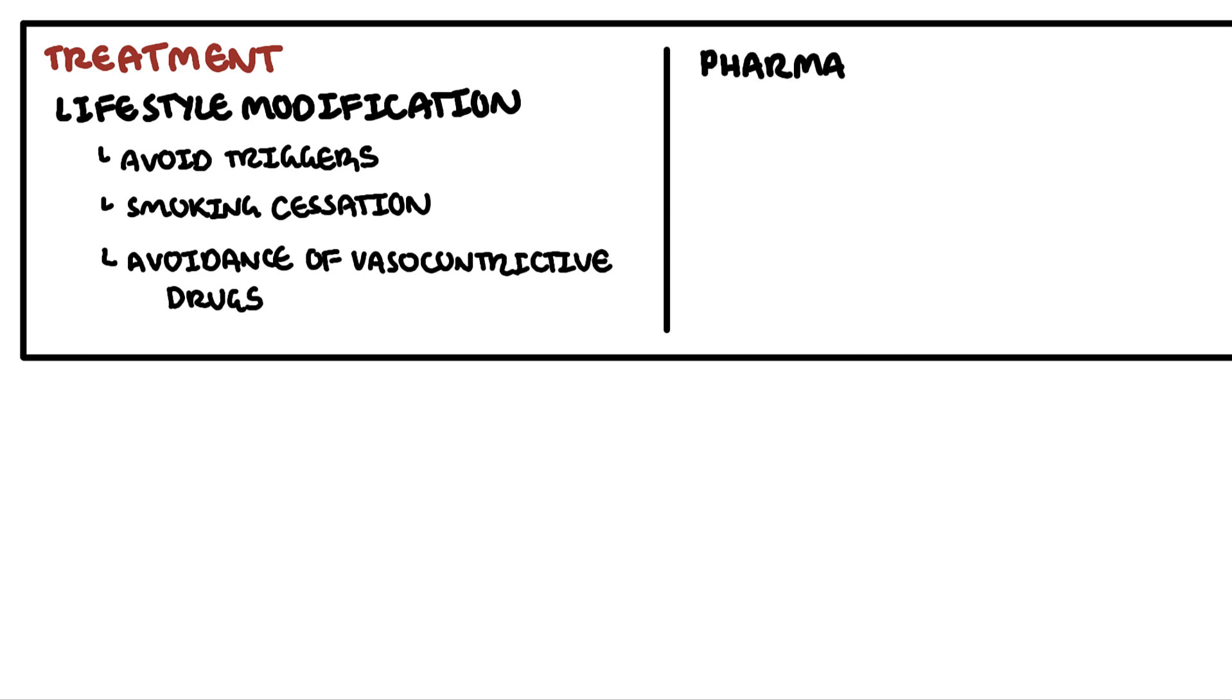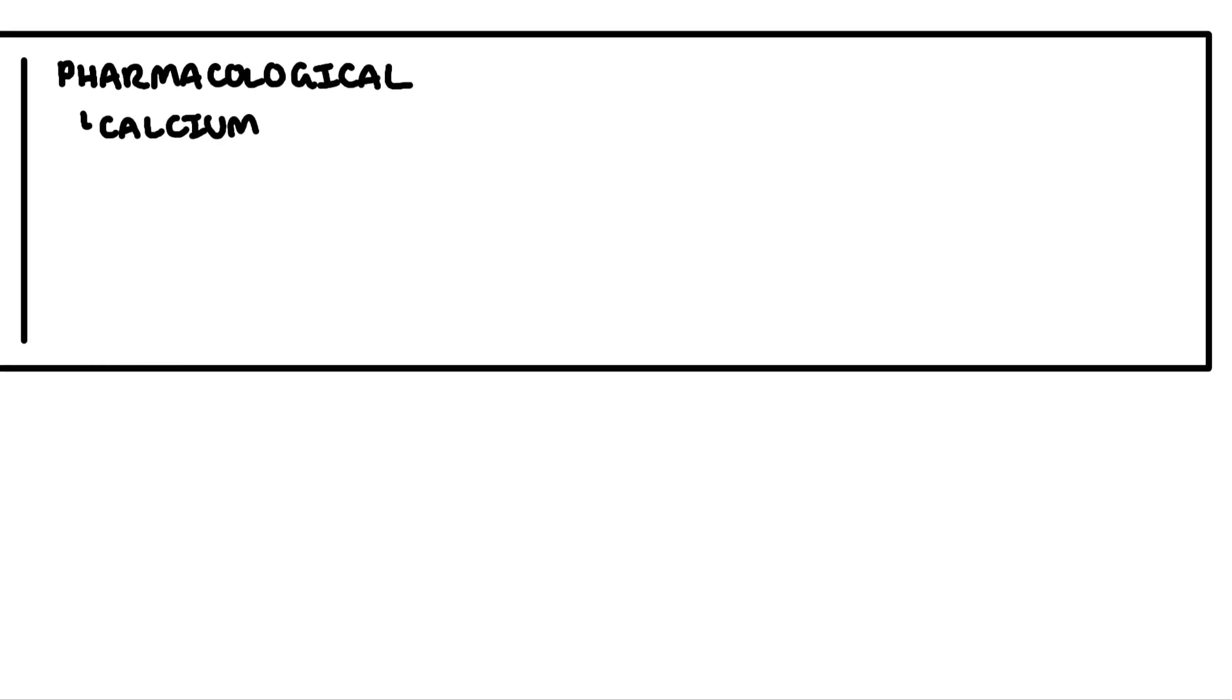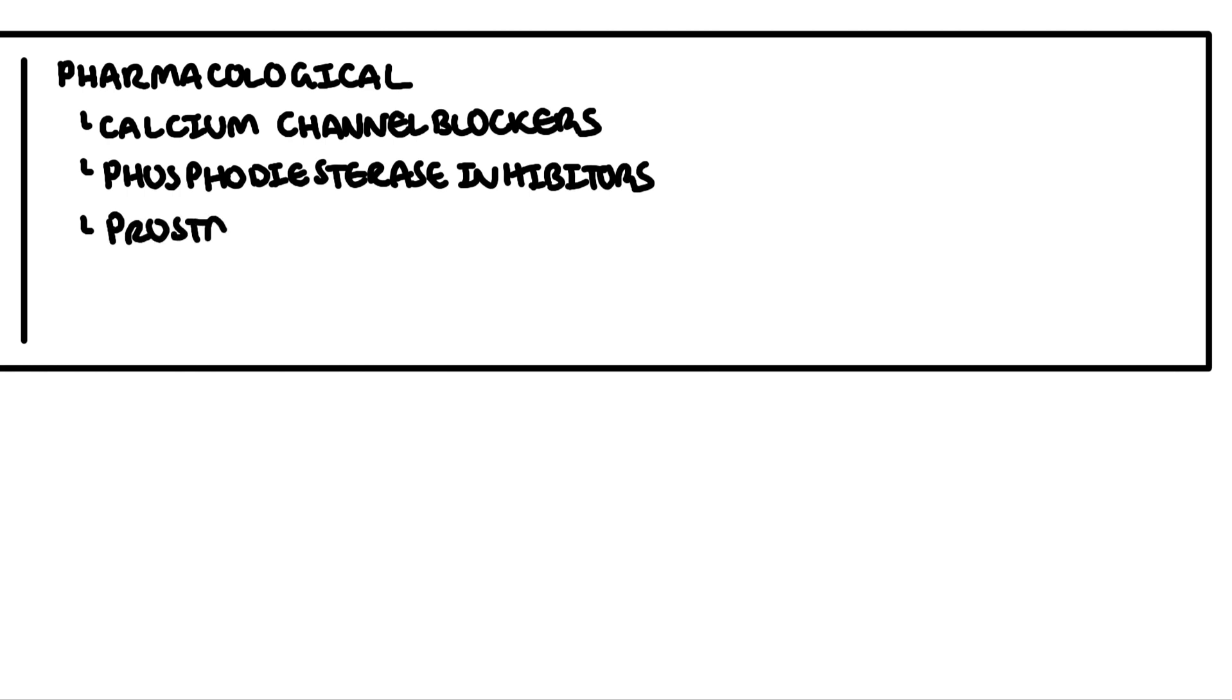Then you can use medications, pharmacological treatment. These include calcium channel blockers, phosphodiesterase inhibitors, prostacyclin analogues, topical nitrates, as well as endothelin receptor antagonists, which are typically used in more severe cases and have been shown to reduce digital ulcer formation.